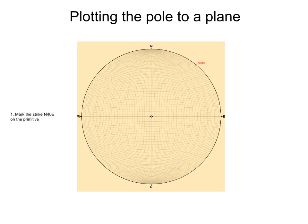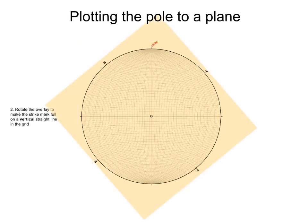First, we mark the strike of the plane on the primitive. Then, we rotate the overlay to make the strike mark fall on a vertical straight line in the grid.